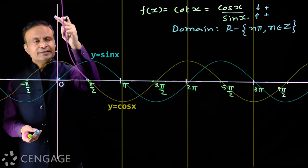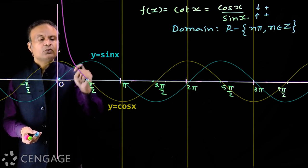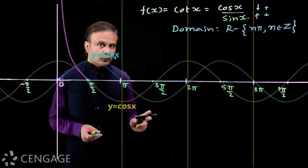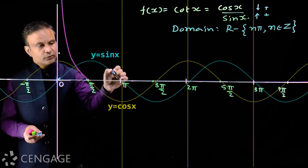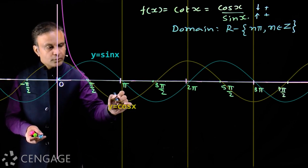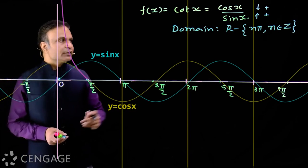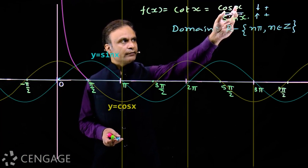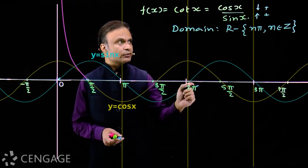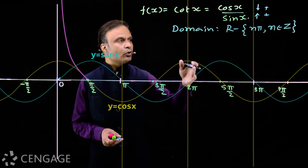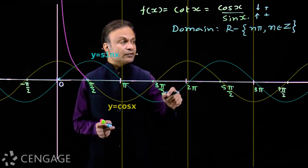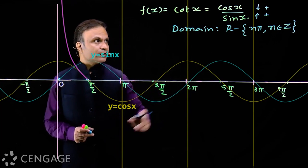Now consider the second quadrant, where x belongs to (π/2, π). Here sin(x) is decreasing from 1 to 0, and cos(x) is decreasing from 0 to −1. That means the numerator is becoming more negative and the denominator is becoming less positive — more negative divided by less positive means the ratio is negative and decreasing.